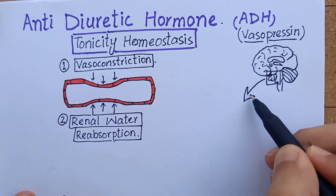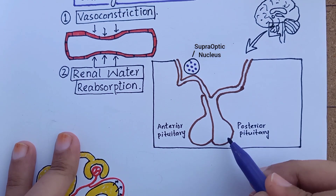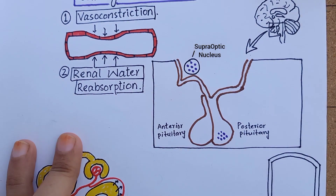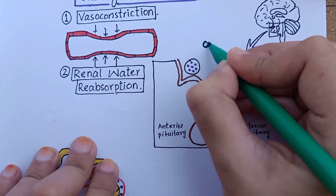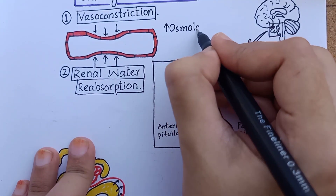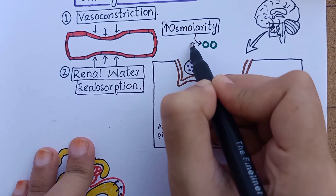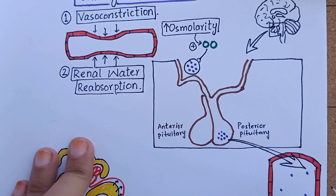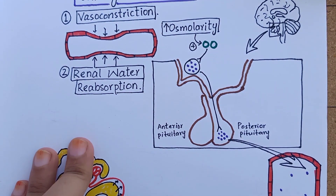Anti-diuretic hormone is produced in the hypothalamus, primarily in the supraoptic nuclei. From here, it is transported down to the posterior pituitary gland where it is stored and secreted into the bloodstream when needed. There are modified neuron receptors known as osmoreceptors. During water deficit like dehydration or fluid loss, high blood osmolarity stimulates these osmoreceptors, which send nerve signals to the supraoptic nuclei to produce additional ADH and also relay signals to the posterior pituitary gland to secrete ADH into the bloodstream.